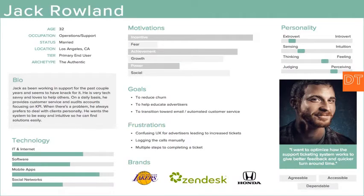An example explains much more than any definition. Let's meet Jack Rowland — he is 32 years old, working in the ICT industry, with quite some experience. He likes specific brands, has a kind of personality — he's quite extrovert. The thing is, Jack Rowland does not exist. It's a persona; he's been designed, and he represents a larger user group.